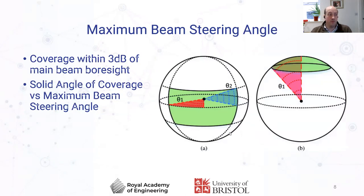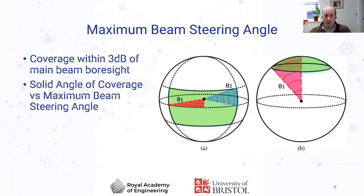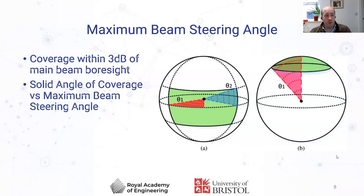Comparing to maximum beam steering angle — whether in radial sense or azimuth and elevation planes — it gives a relatively limited understanding of how much of the far field you're actually able to reach. Steering efficiency, given it's a percentage, is a much more coherent way of evaluating an array's steering performance.